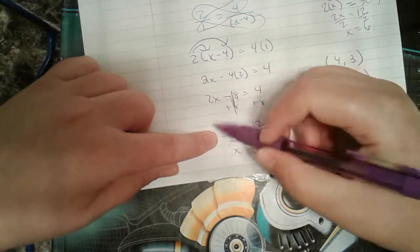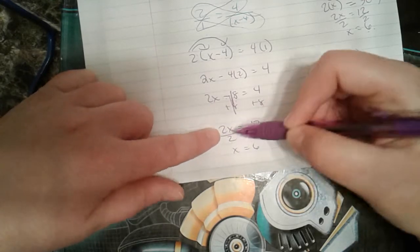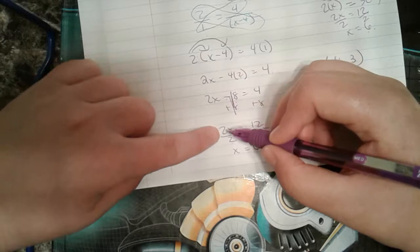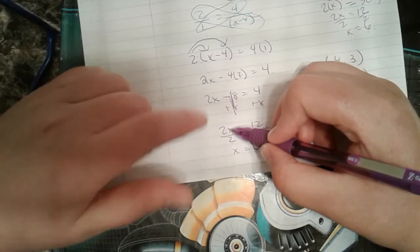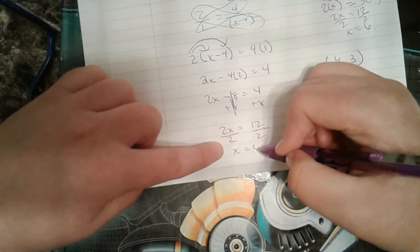So now I have 2x equals 12. How do I get x by itself? I need to divide. Because inverse operation of multiplication is division. And again, I know that this is multiplication because they're hugging each other. They're touching each other. So divide by 2. I get x equals 6.